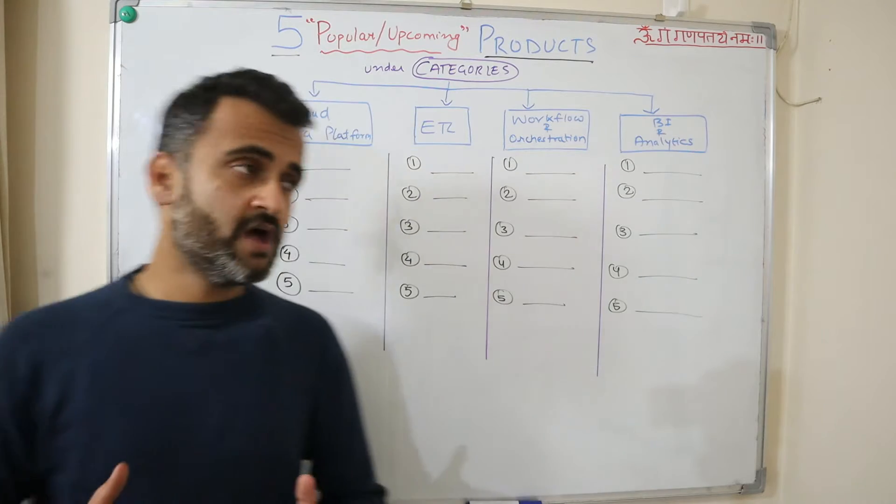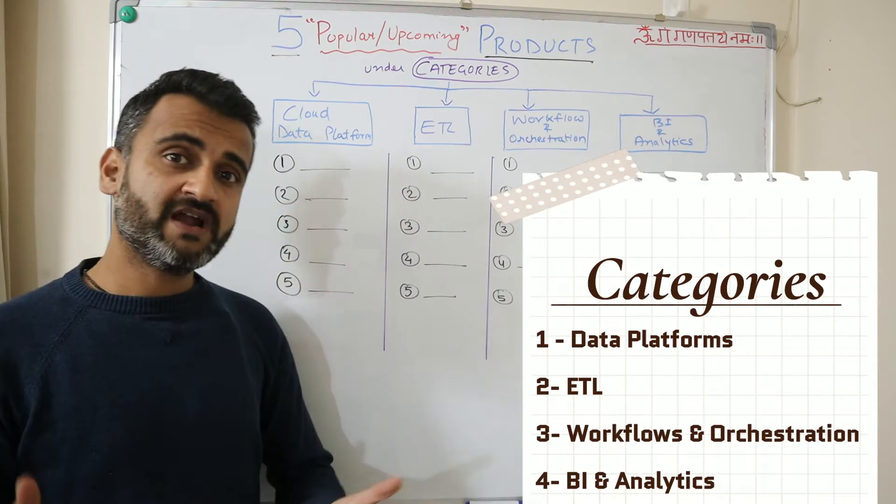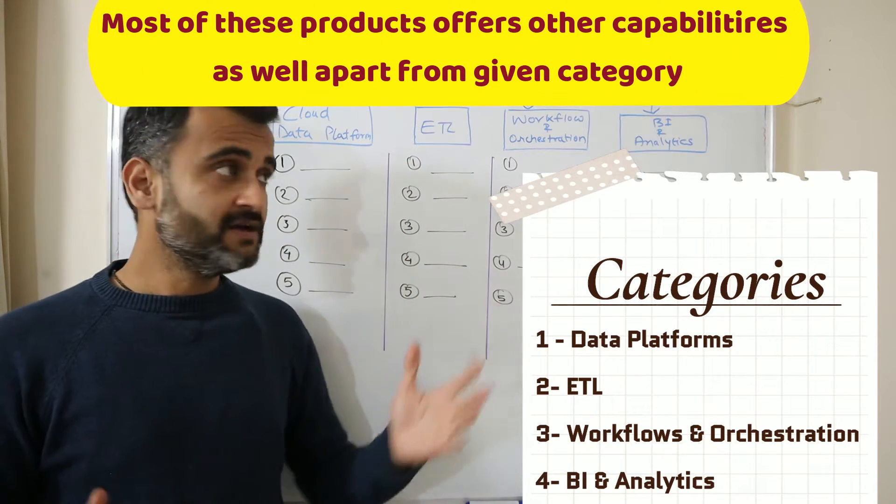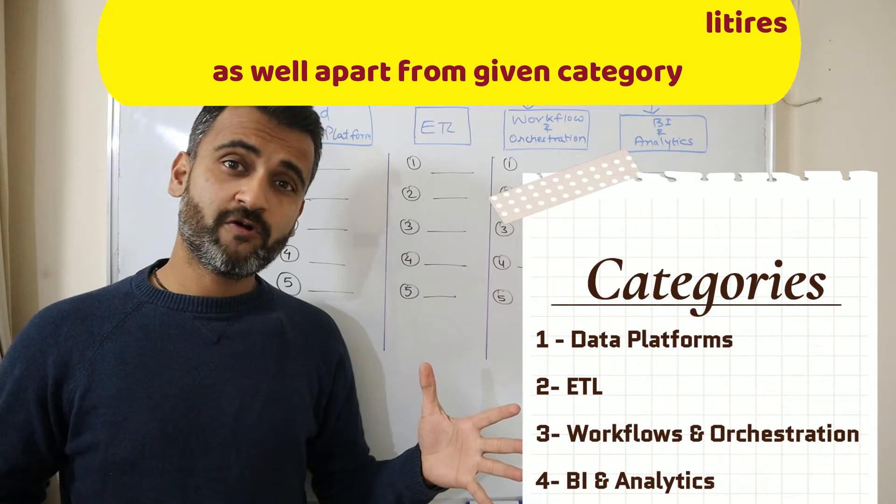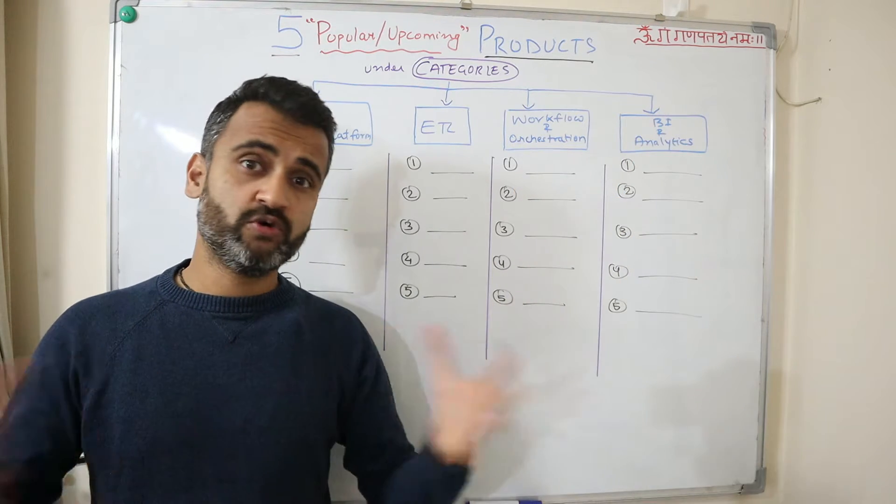In this video I have categorized these products under four different categories. One is cloud data platforms like where we store the data on cloud. Second is ETL. Third is workflow and orchestration of your data pipelines, and fourth is BI analytics and reporting products.